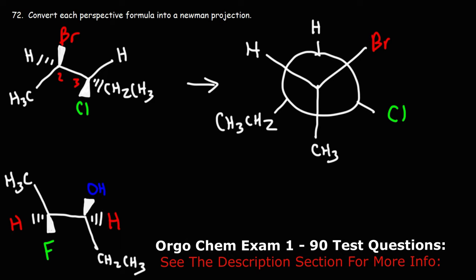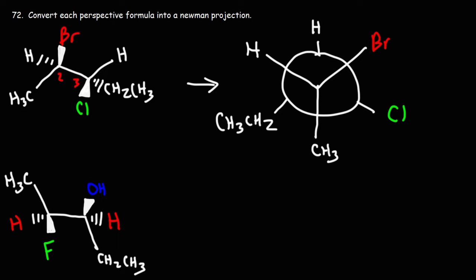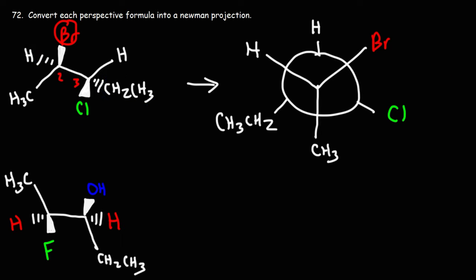That's how we can convert a perspective formula into a Newman projection. Remember: if it's on the wedge, put it on the right side. If it's on the dash, put it on the left side. And then pay attention to these groups to see if they're anti to each other or on the same side, to know if you have the staggered or eclipsed conformation.